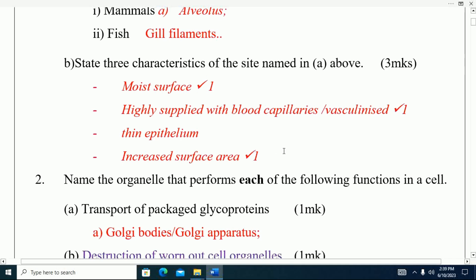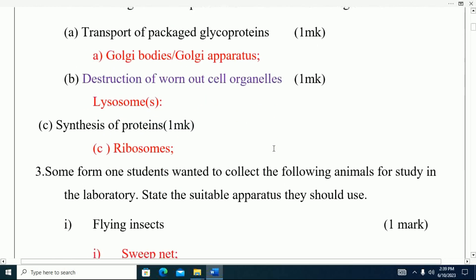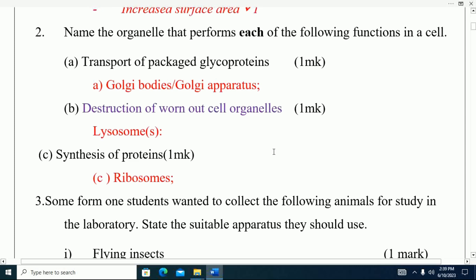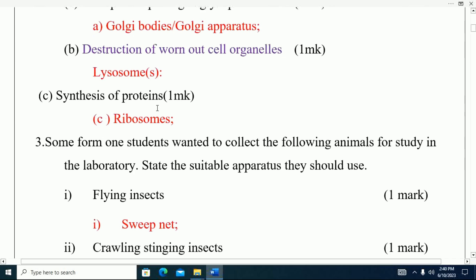Question number two: Name the organelle that performs each of the following functions in a cell. A: transport of packaged glycoproteins - that one is Golgi bodies, you can also call them Golgi apparatus. B: destruction of worn out cells - that one is lysosomes. C: synthesis of protein - that one is ribosomes.